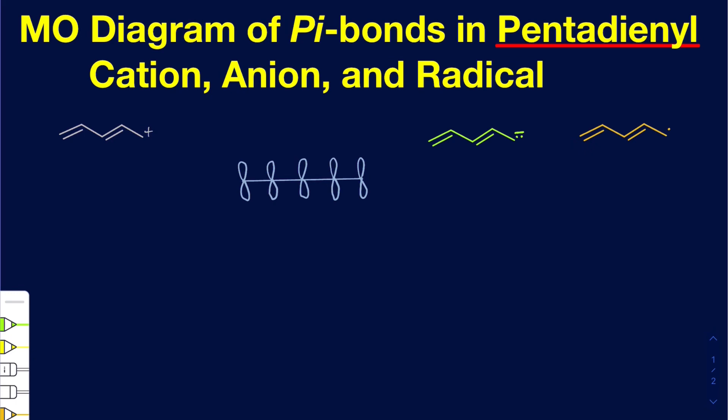I'm going to specifically take an example of pentadienyl cation, anion, and the radical. The arrangement of their pi system molecular orbitals is going to be pretty much the same. The only difference you're really going to have is where their HOMOs and LUMOs are going to be. So before we talk about those individual ones, let's focus on the cation.